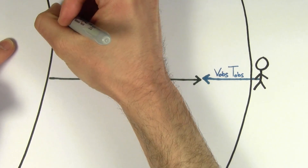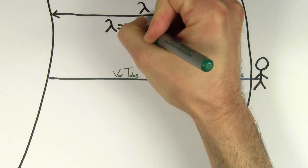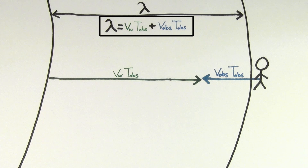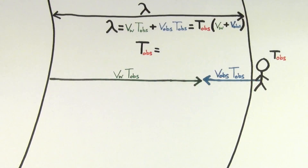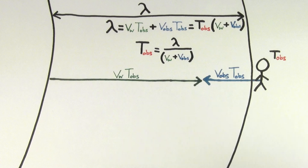Now, we know that the distance between crests is the actual wavelength of the wave — not the observed wavelength, but the actual source wavelength emitted by the speaker at rest. So if we add up the distance that we ran plus the distance that the next wave crest traveled to meet us, they have to equal one wavelength. We can now pull out a common factor of T-OBS, and if we solve for the period of the observer, we find that it equals the wavelength of the source divided by the speed of the wave plus the speed of the observer.